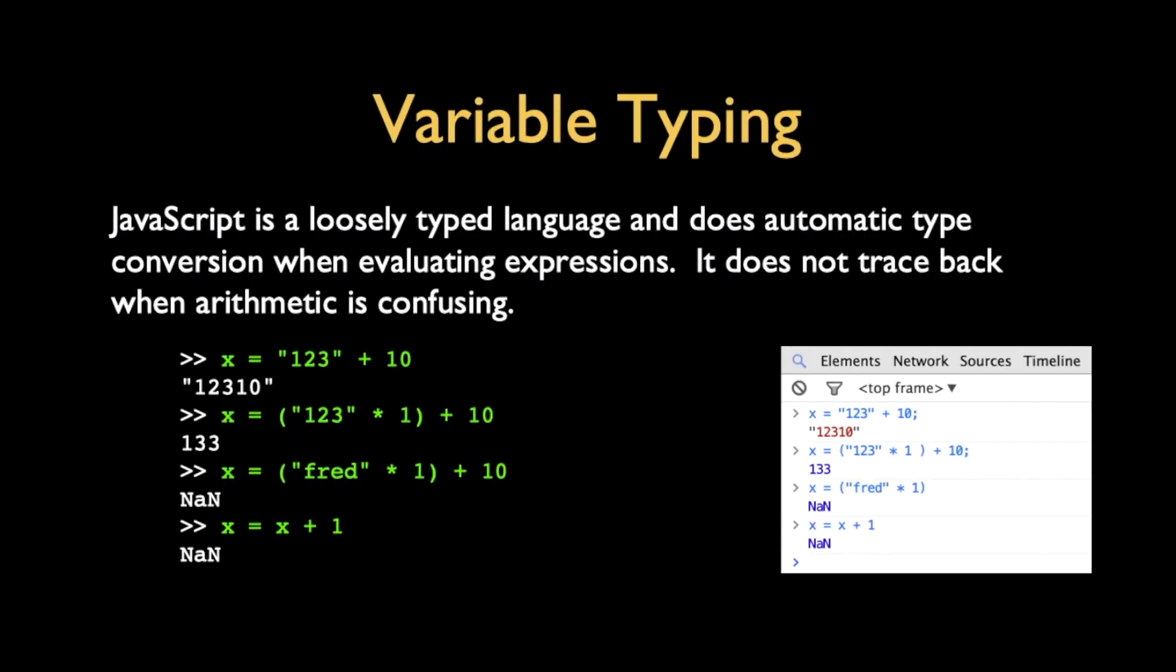So, variable typing is a little confusing because we're using plus. Sometimes we're using it for concatenation. Sometimes we're using it for addition. So, in this particular case where we take the string one, two, three and add 10 to it, it sees that as a concatenation and gives us back a string. But if we say the string one, two, three times one, then it converts that to an integer. Times one, and that's 10. So, it becomes 133, but that is a number.